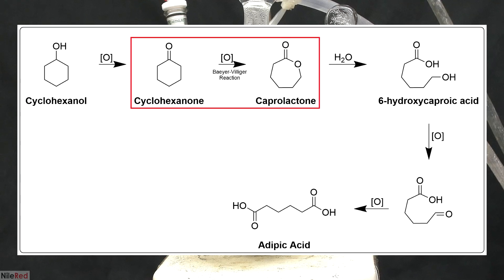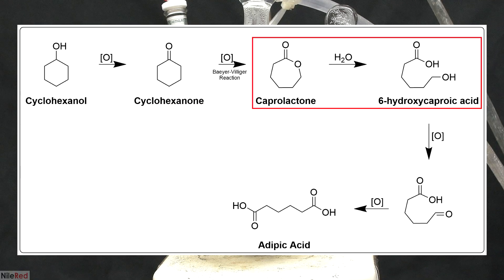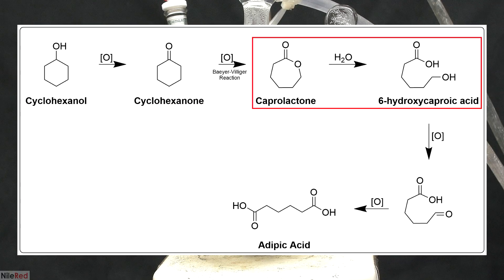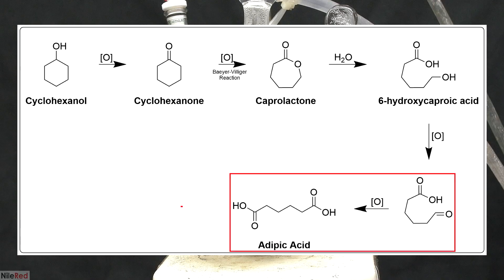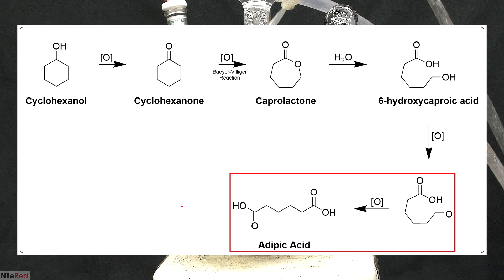The cyclohexanone then undergoes a Bayer-Villiger reaction, which converts the cyclic ketone to a lactone group. The caprolactone is slowly hydrolyzed by water, which breaks apart the ring and forms 6-hydroxycoproic acid. The hydroxyl group is then further oxidized to form an aldehyde. In the final step, the aldehyde group is oxidized to a carboxylic acid, which gives us the final adipic acid.